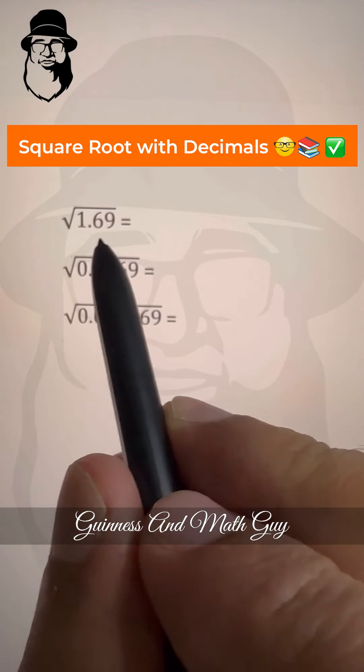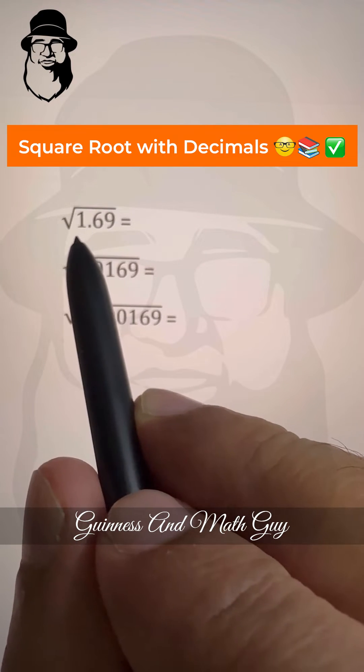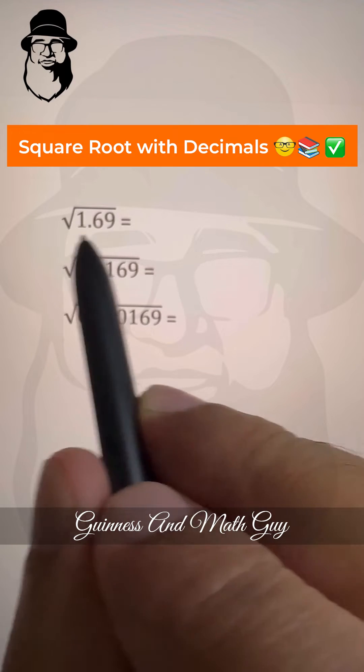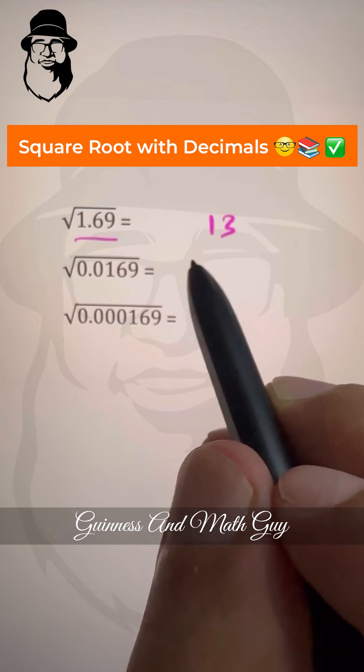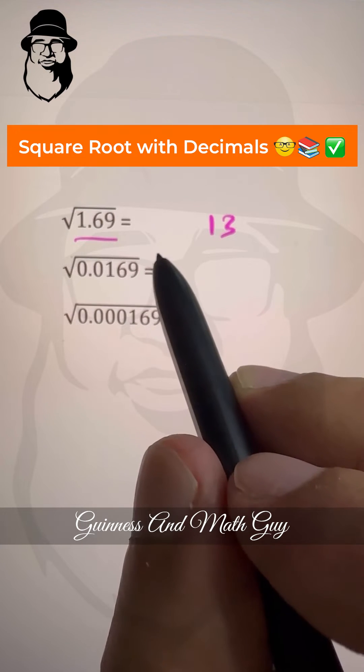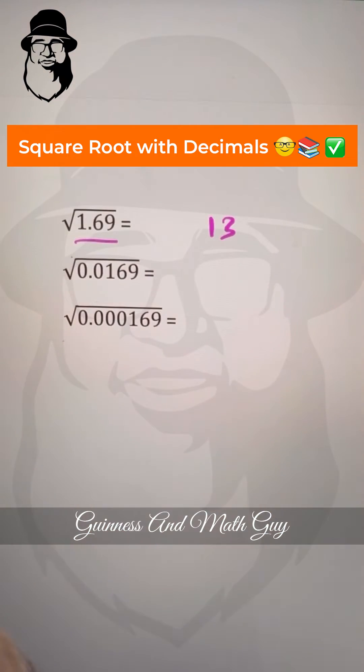Now in these types of questions, just look at the whole number without considering the square root sign or decimal point. Square root of 169 is 13 because 13 times 13 is 169, or 13 squared is 169.